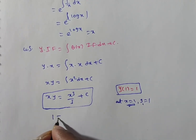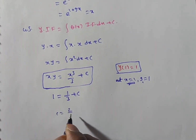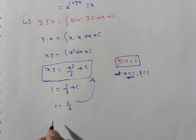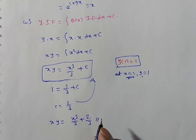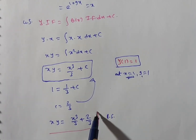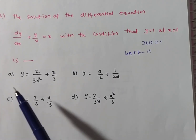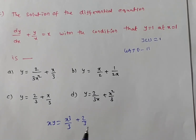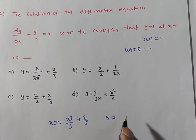Substituting x = 1 and y = 1: 1 × 1 = 1³/3 + C, so 1 = 1/3 + C, therefore C = 1 - 1/3 = 2/3. Substituting C = 2/3 back into the general solution gives the particular solution: x·y = x³/3 + 2/3.